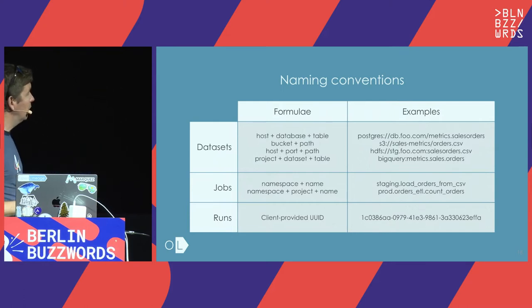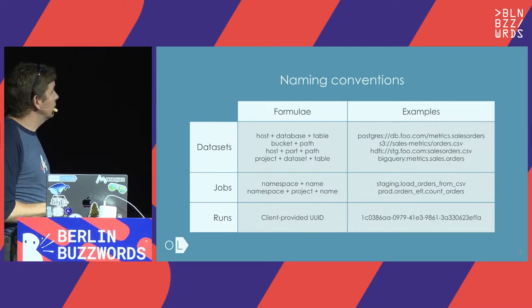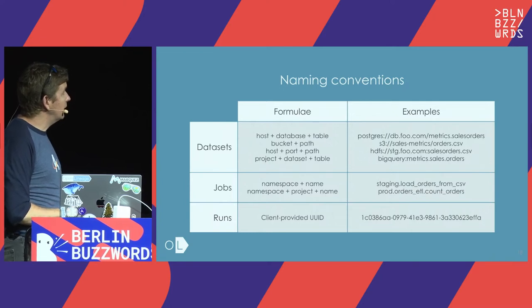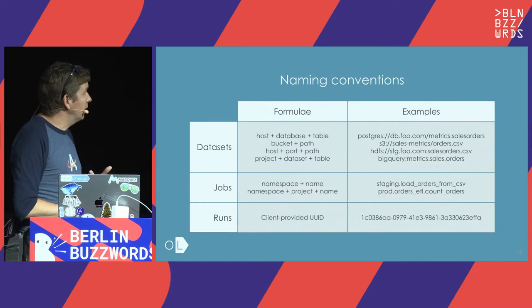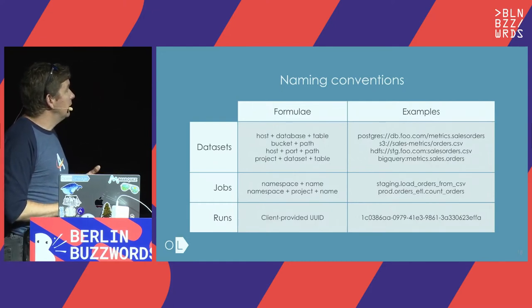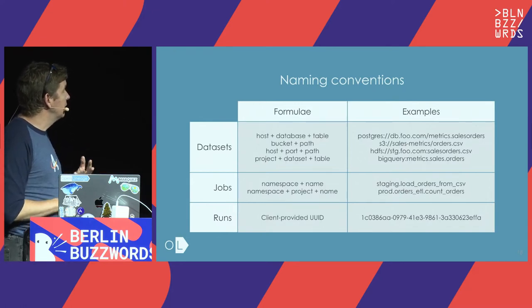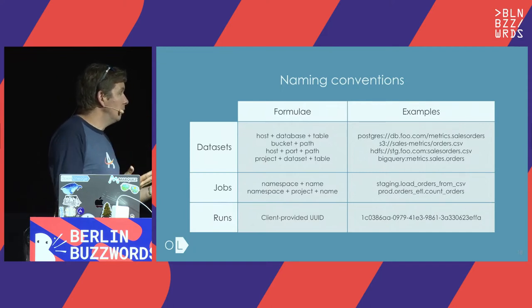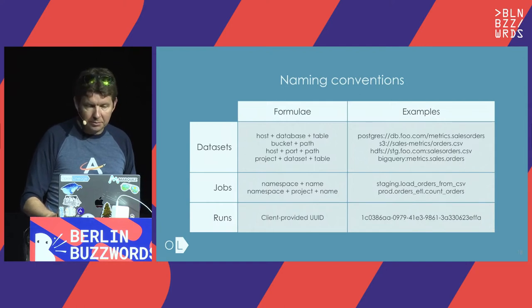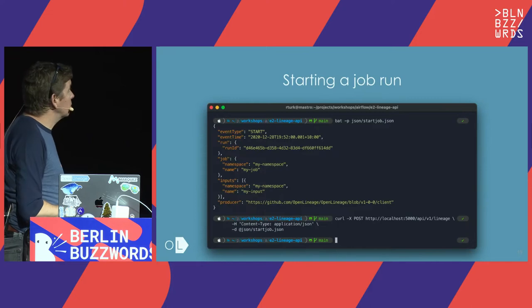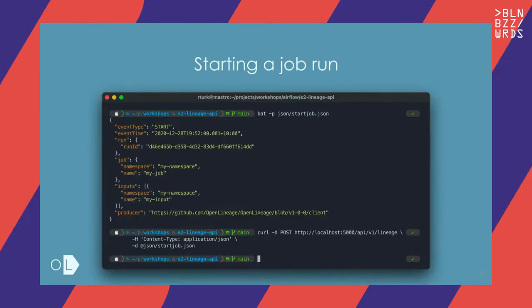The OpenLineage spec defines standards on how to uniquely identify those data sets, whether they're files in distributed file systems or object stores, or tables in databases or cloud warehouses, and similarly for jobs. To give a more concrete example, the simplest version of an event has a type of 'start', a timestamp, a run ID, the job's unique name, and the inputs and outputs' unique names. The simplest version doesn't have any other metadata, but you can add facets with their own pieces of information.